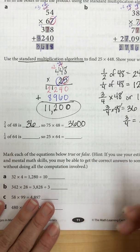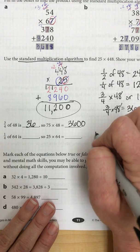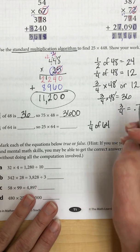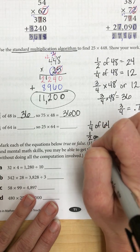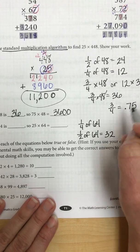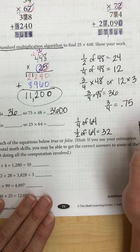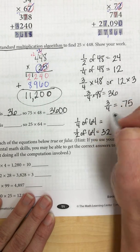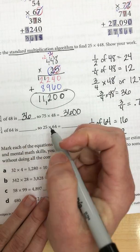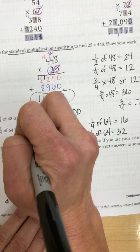On my next problem, problem number four, I have one fourth of 64. I'm going to start again with a half. I know that one half of 64 equals 32. So half of that would be a fourth, so one fourth would be 16. So one fourth of 64 is 16.